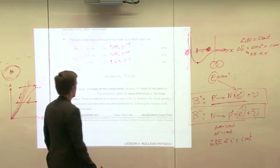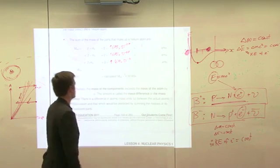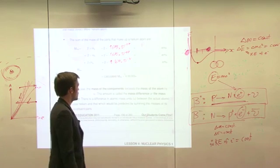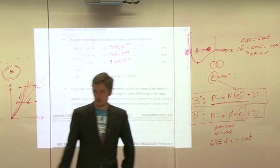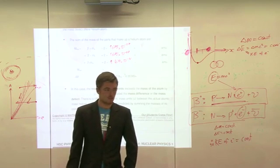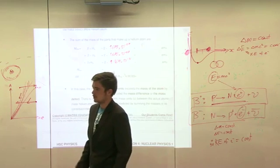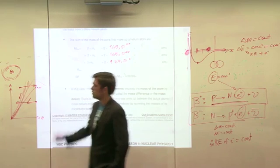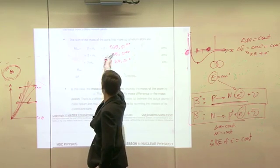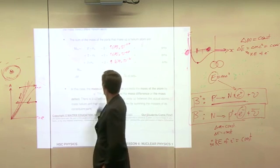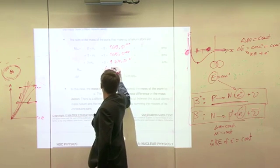So the mass of the helium nucleus is then two times all of those things. And what do we get? Just somebody plug it in for us. Don't worry about doing it in AMUs, just give it to me in kilograms. Two times this, plus two times this, plus two times that. 6.7.